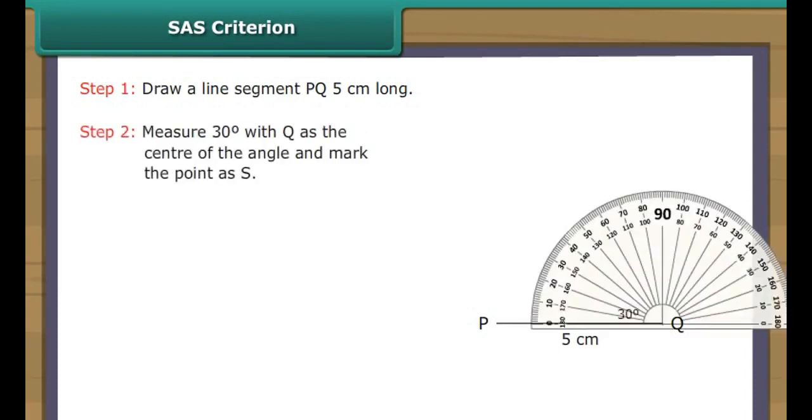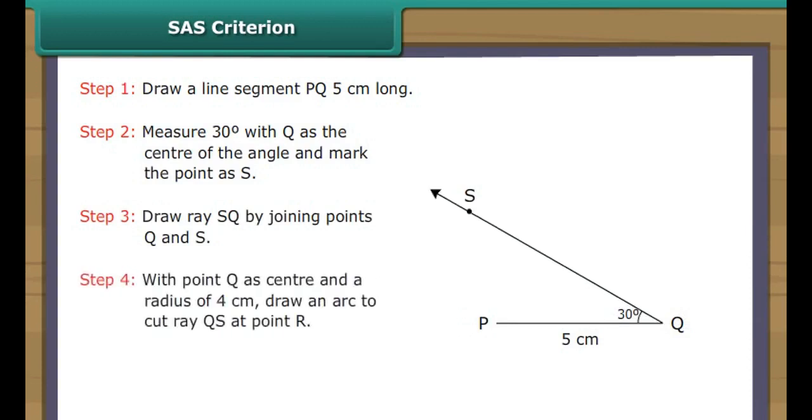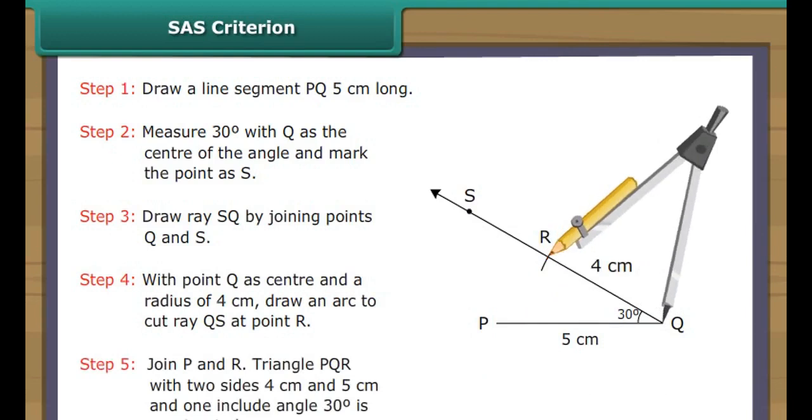SAS Criterion. Let us now draw a triangle whose two sides measure 4 cm and 5 cm and the included angle measures 30 degrees. Draw a line segment PQ 5 cm long. Measure 30 degrees with Q as the center of the angle and mark the point as S. Draw ray SQ by joining points Q and S. With point Q as center and a radius of 4 cm, draw an arc to cut ray QS at point R. Join P and R. Triangle PQR with two sides 4 cm and 5 cm and one included angle 30 degrees is constructed.